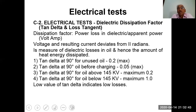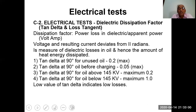The dielectric dissipation factor (tan delta) is the power loss in the dielectric relative to apparent power, measuring deviations from ideal capacitive behavior. It is a measure of dielectric losses in oil and hence the amount of heat energy dissipated. Tan delta at 90°C for used oil is 0.2. For oil before charging: 0.05. For oil above 145 kV: maximum 0.2. For oil below 145 kV: maximum 1.0. A low value of tan delta indicates low losses.